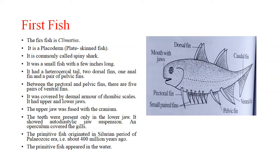When we talk about the first fish, the first fish is Climatius. It is a placoderm, meaning plate-skinned fish. It is commonly called spiny shark. It was a small fish, a few inches long.